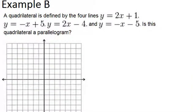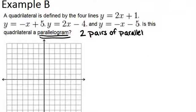In example B, it says a quadrilateral is defined by the four lines, and then we have four equations. Is this quadrilateral a parallelogram? So to be a parallelogram, it has to have two pairs of parallel sides. So that means that it has to have two pairs of lines that are parallel. And remember, to be parallel means that two lines have the same slopes.